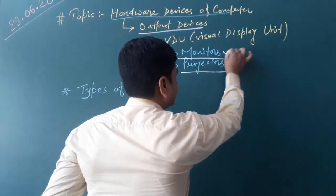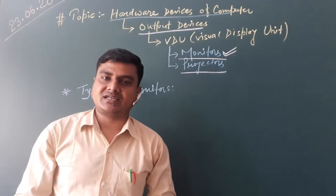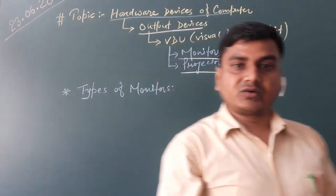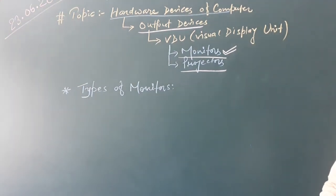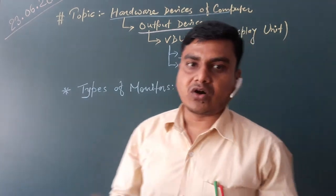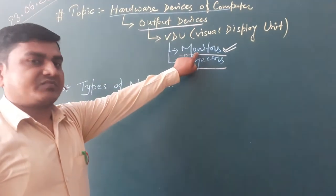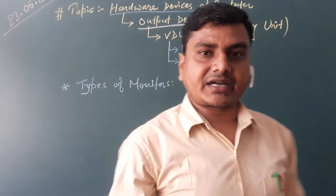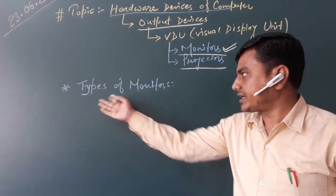Today, first, I am going to discuss about the monitors. A monitor is an output device of a computer which is used to display all the outputs and results on a TV-type screen. In simple language, a monitor is just like a TV-type screen on which the output of the computer is displayed. All monitors are divided into different categories. The next topic we have is: types of monitors.